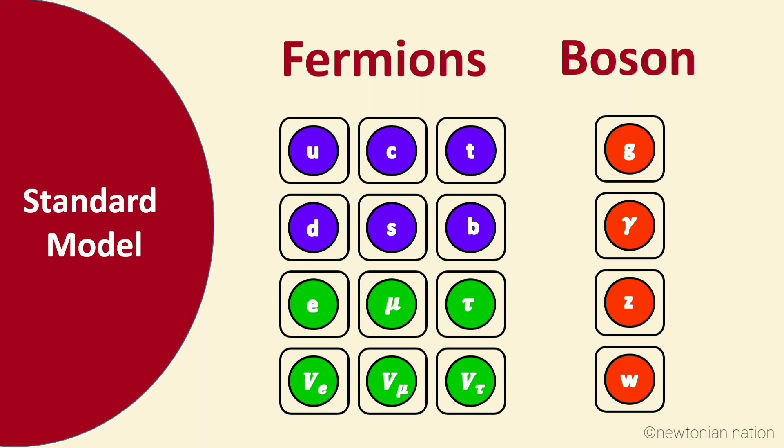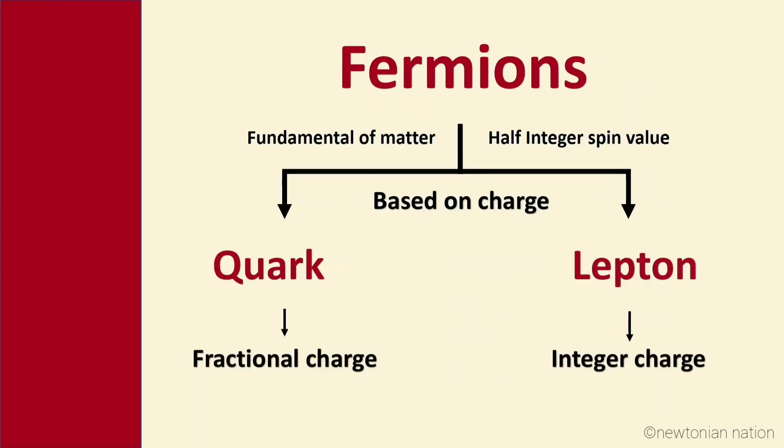Fermions are further classified into two categories: quarks and leptons. Quarks are fundamental constituents of matter. Leptons are elementary particles which do not undergo strong interaction.